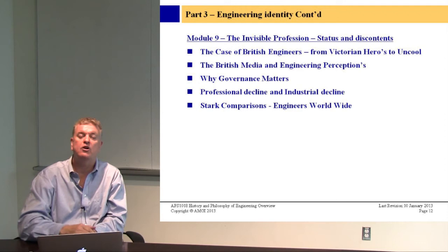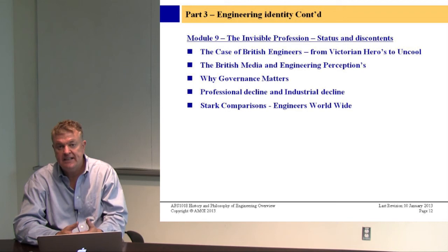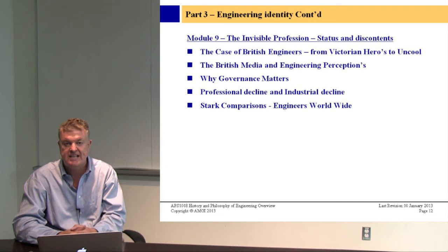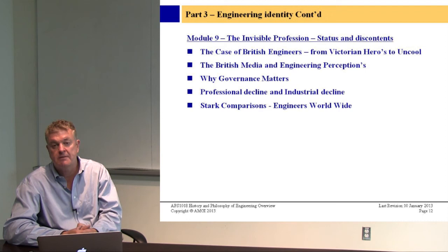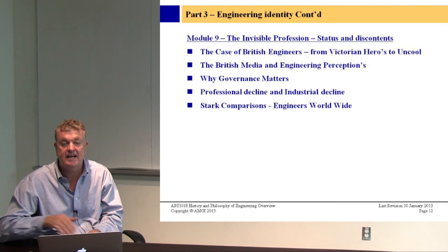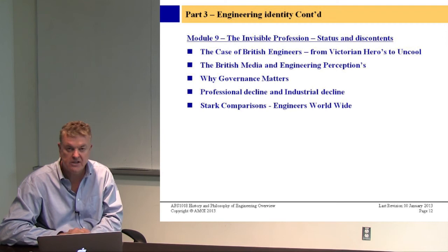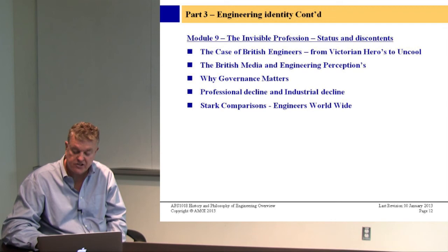We'll also look at how the profession is governed in different countries. Many employers resist licensing because they don't want to lose control. In the United States the license is given by the state; in Canada it's self-regulated by the engineering profession. Most employers in the US will not recognize the licensing requirement because they don't want engineers to gain too much power or form unions. In Britain there is no licensing process at all other than for aircraft mechanics and gas fitters. Stark comparisons of how the engineering profession is governed worldwide.